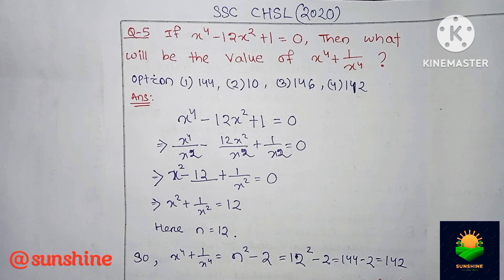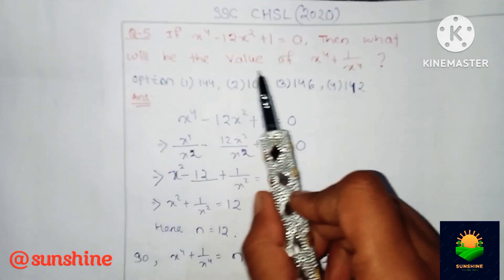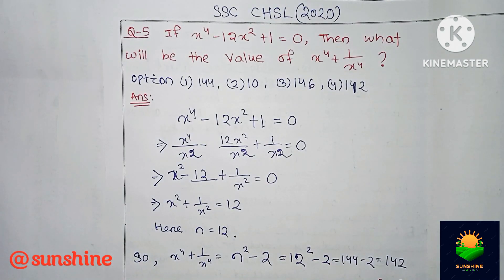If x to the fourth minus 12 x square plus 1 equal to 0, then what will be the value of x to the fourth plus 1 by x to the fourth?